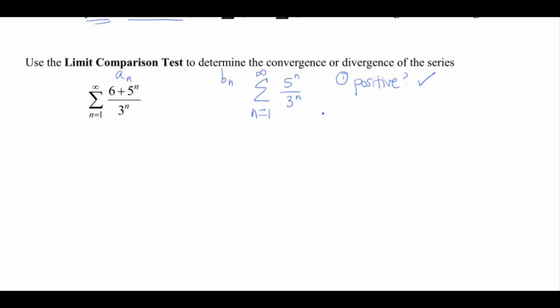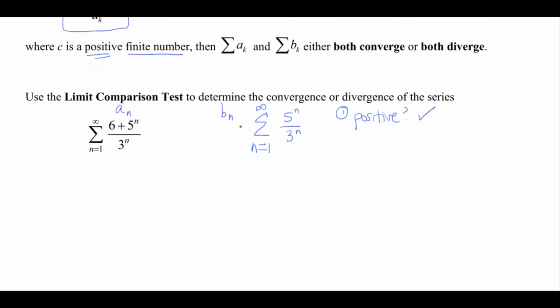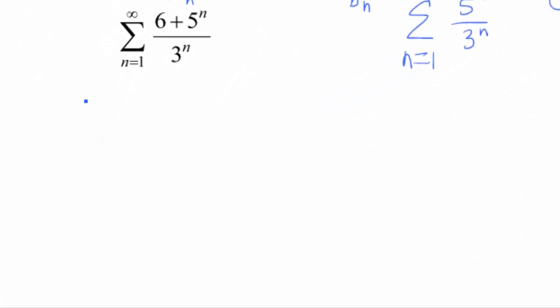All right, second thing we need to check then is if we do the limit of 1 divided by the other one, and honestly, it doesn't matter which way you wanna divide them. Probably doing a sub n over b sub n is gonna make more sense, although, which way did I define it? I said b sub k over a sub k, okay, so then we could just switch them around, whatever, it doesn't really matter. It just means the limit of when you divide them out.